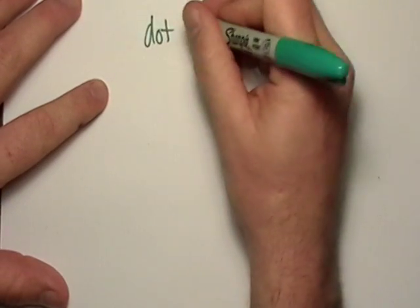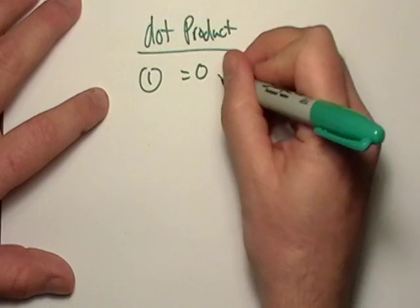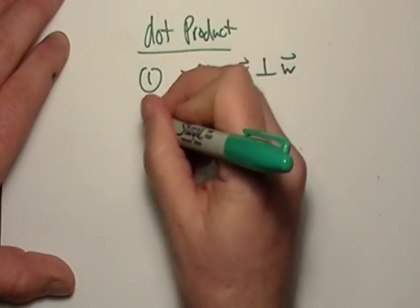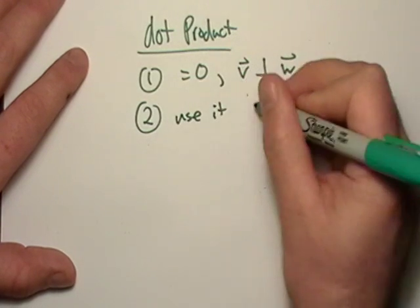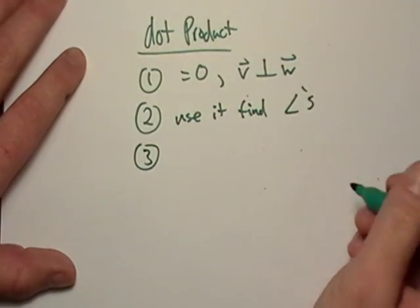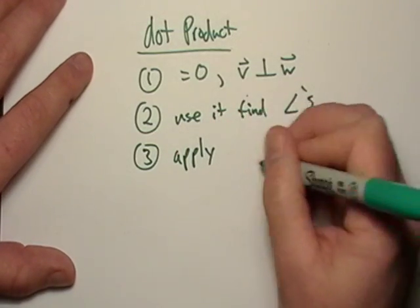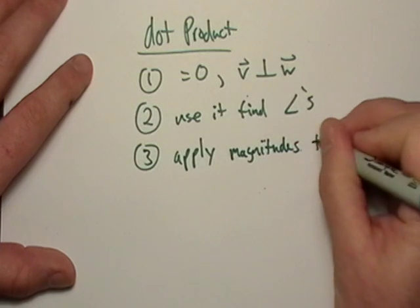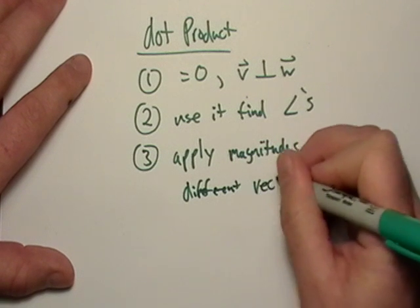So dot product. One. If it equals zero, then v is perpendicular to w. Number two, we can use it to find angles. And three, we can apply magnitudes to different vectors.